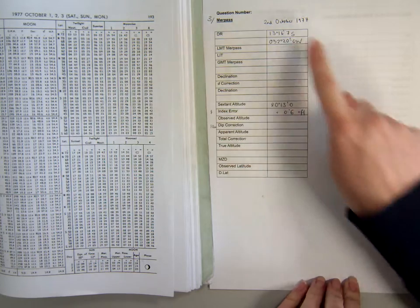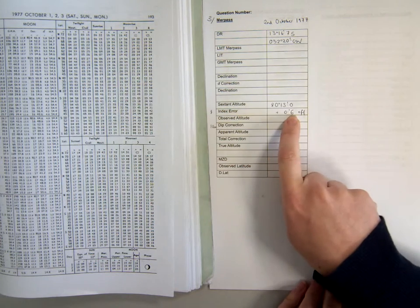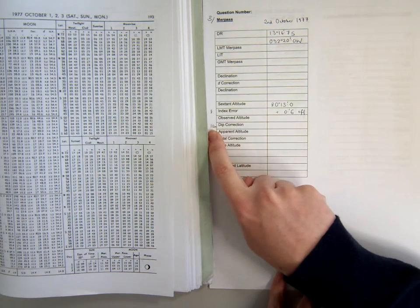Obviously the date, the DR, you've got a sextant altitude and obviously index error and a height of eye there.